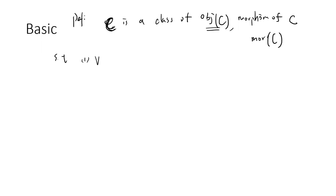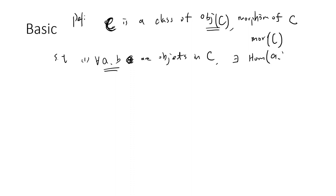So if you take any A and B — I should not say 'belong' because the object is a class — so if A and B are objects in C, then there is a set called Hom(A, B). Hom(A, B) is a set. Basically, for each two objects you can associate a set. I can write this as an arrow.